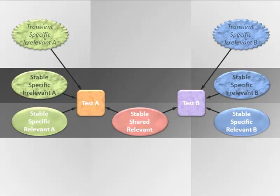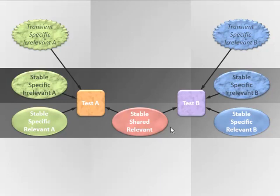Some influences are stable, relevant to the construct, but specific to one test or the other. How could this be? If they're measuring a common construct, how could there be specific influences? If the construct that we're measuring is not unidimensional — it is by nature multidimensional — we can have specific abilities that are part of the construct. For example, arithmetic is not unidimensional; we can divide it by the four major operations: addition, subtraction, multiplication, and division. Suppose test A is a measure of addition and test B is a measure of subtraction. They're both measuring arithmetic, with shared parts, but the addition test has parts specific to test A, and the subtraction test has aspects relevant to subtraction specifically — for example, borrowing and regrouping, which doesn't happen in addition in the same way, but is part of arithmetic and part of subtraction specifically.